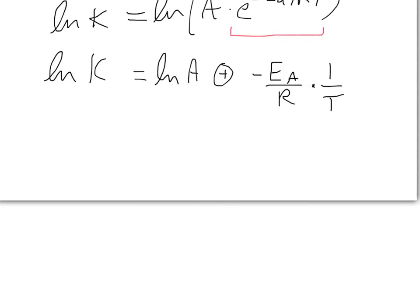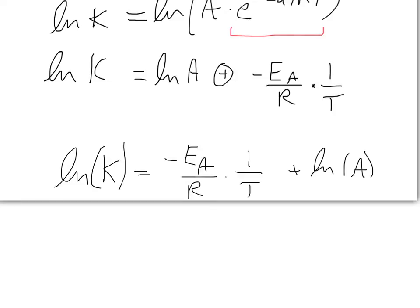So, why does this look so cool? Well, let me just kind of move things around here. So, I've got natural log of the rate constant, the thing I can measure, equals minus the activation energy over the ideal gas constant, times by one over the temperature, I can control that, plus the natural logarithm of A, our pre-exponential factor. So, this is our favorite thing in the world. This is a y equals mx plus b equation.